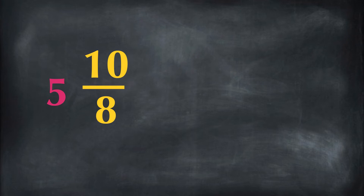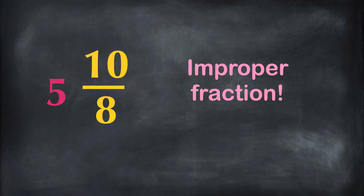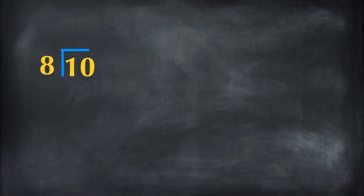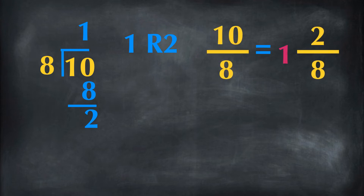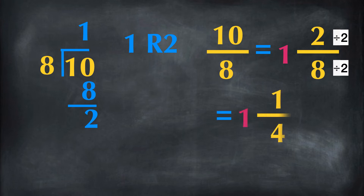However, 5 and 10 eighths contains an improper fraction, so we are going to change it into a mixed number. 8 goes into 10 one time. 8 times 1 is 8. 10 minus 8 is 2. 2 is a remainder. 10 eighths equals 1 and 2 eighths. 2 eighths can be simplified into 1 fourth by dividing by 2 on both numerator and denominator. So the improper fraction 10 eighths equals the mixed number 1 and 1 fourth.